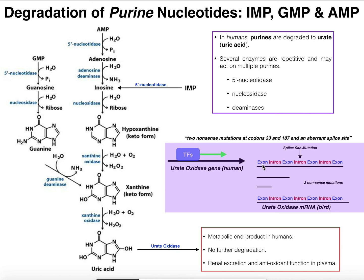As a result, we do transcribe the gene, but we really don't see any protein. And even if the protein were made, it would be way too short to have any function. Overall, urate oxidase is non-functional in humans, so uric acid is not degraded any further — it is our end product.